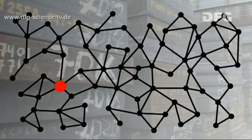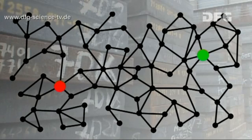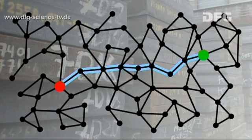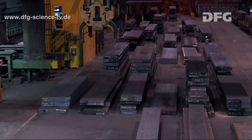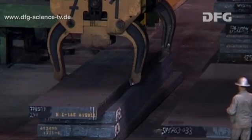One of the nodes represents the current storage state and another represents the required final state — the state necessary so that the slabs can be rolled in the right order. The path from the initial state to the target state represents a sequence of crane movements.